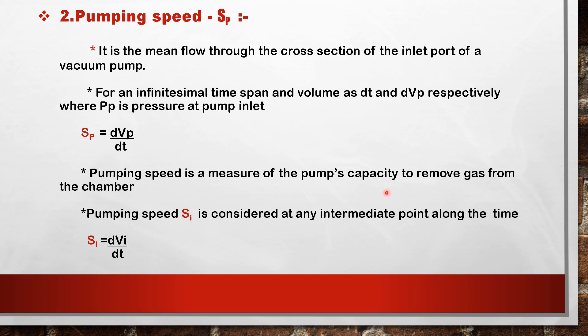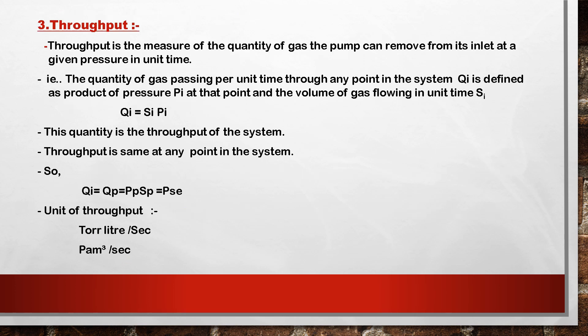The pumping speed S_p is a measure of the pump's capacity to remove gas from the chamber. The pumping speed at any intermediate point along the line is S_i = dV_i/dt. Throughput is a measure of the quantity of gas that the pump can remove from its inlet at a given pressure per unit time.